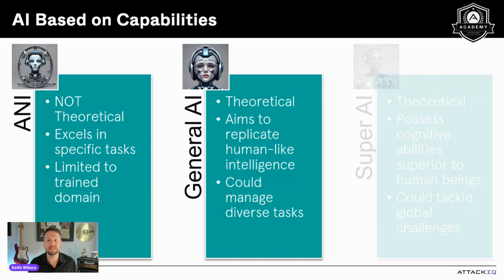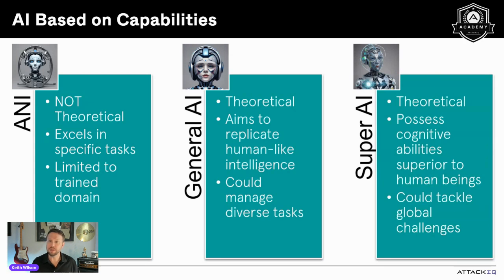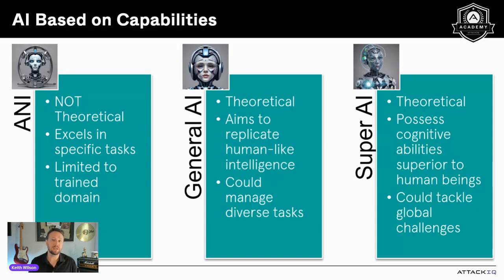Last but not least, there's Super AI — also theoretical. It goes beyond General AI by possessing cognitive abilities superior to human beings. It can tackle global challenges, create art, and make decisions with a level of insight and creativity that surpasses human capabilities. While ANI is narrow and task-specific, General AI and Super AI represent advanced and versatile forms of artificial intelligence with the potential to reshape society and AI security.